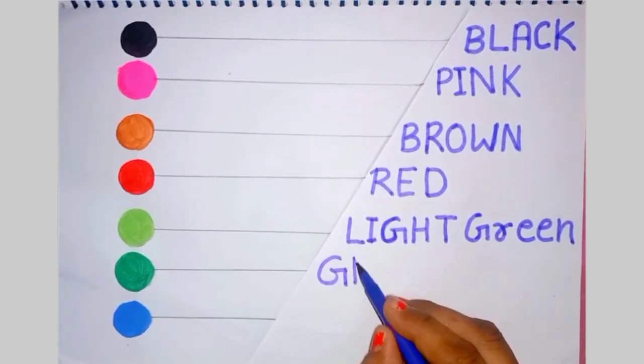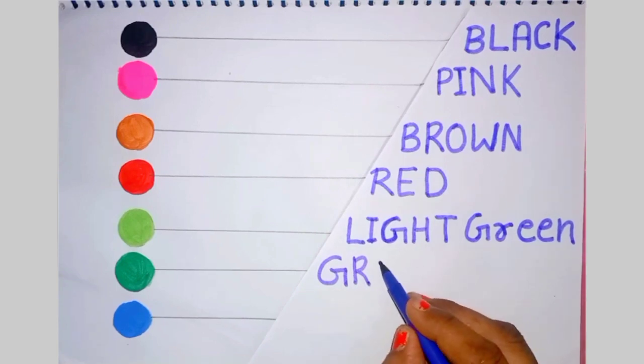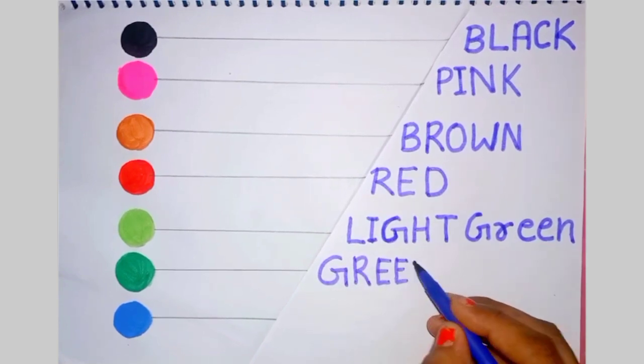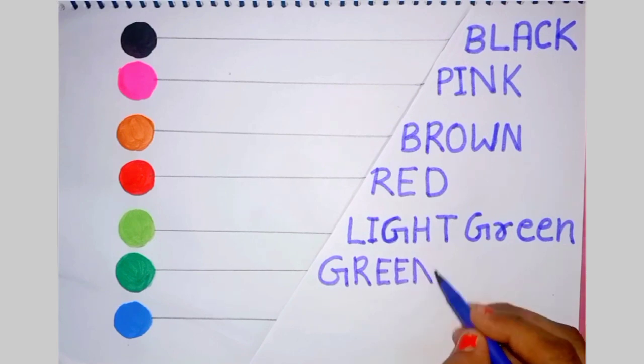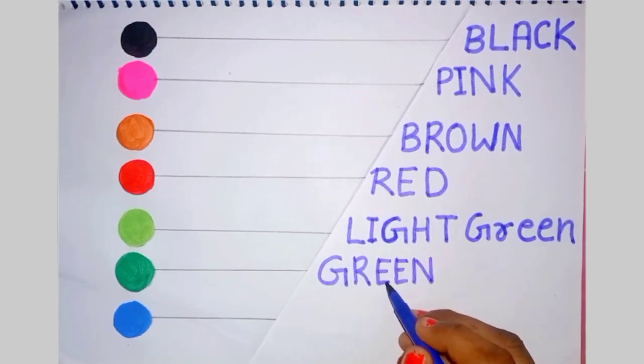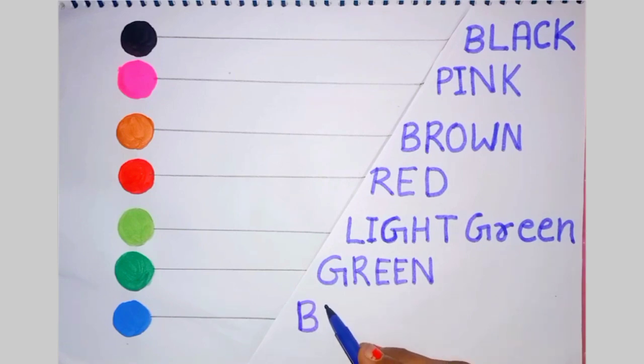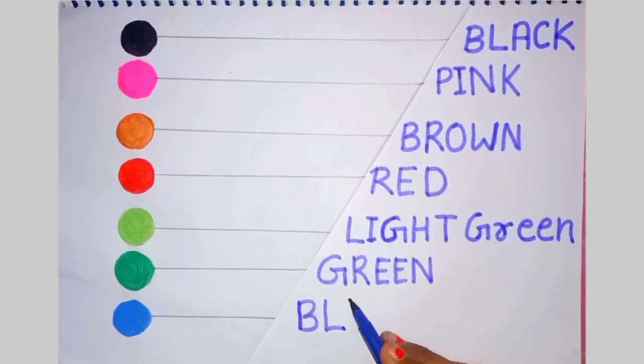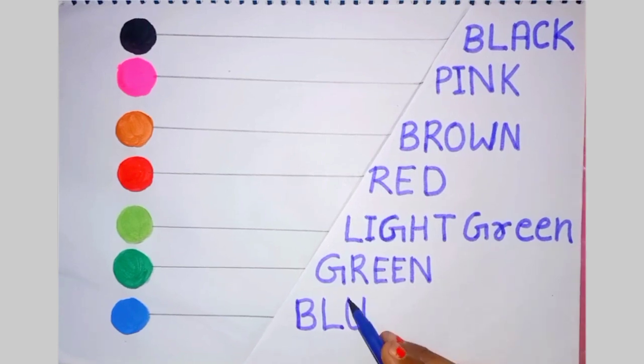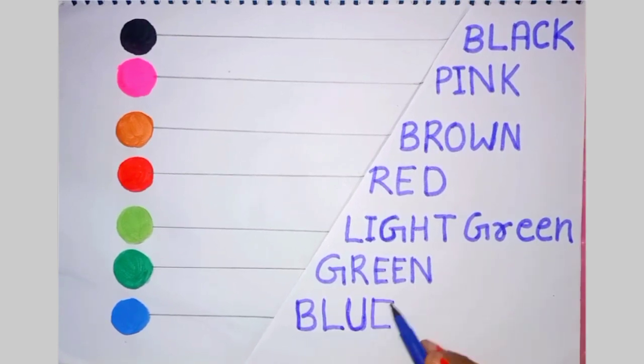G-R-E-E-N, green. Green means hara. This is the blue color. B-L-U-E, blue. Blue means neela.